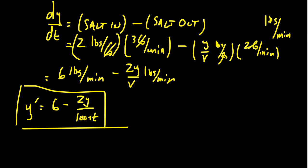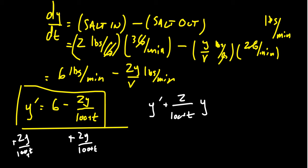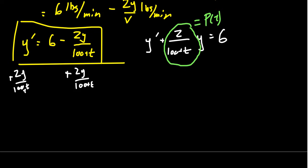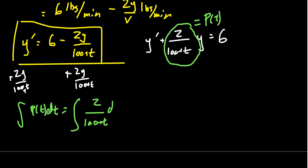This equation is not separable — we can't separate the variables this time — but we can treat this as a linear first-order differential equation. Adding 2Y over (100 + T) to both sides, we get Y prime plus 2 over (100 + T) times Y equals 6. So our function P(T) is 2 over (100 + T), which we need to integrate for the integrating factor. Integrating P(T) with respect to T, we get the integral of 2 over (100 + T) dt, whose antiderivative is 2 times the natural log of (100 + T). You don't need a constant when computing integrating factors.